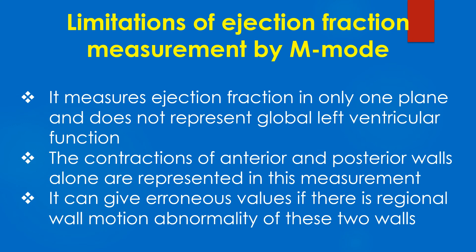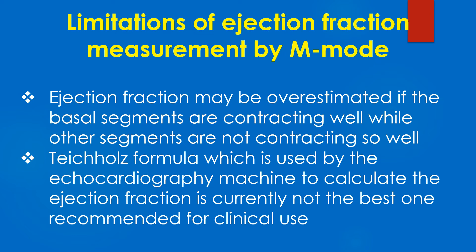Limitations of ejection fraction measurement by M mode: it measures ejection fraction in only one plane and does not represent global left ventricular function. The contractions of the anterior and posterior walls alone are represented in this measurement. It can give erroneous values if there is regional wall motion abnormality of these two walls. Ejection fraction may be overestimated if the basal segments are contracting well while other segments are not. The Teichholz formula, which is used by echocardiography machines to calculate ejection fraction, is currently not the best one recommended for clinical use.